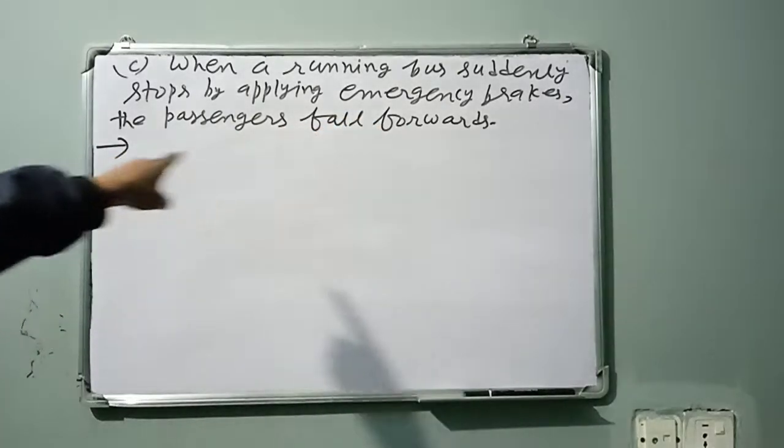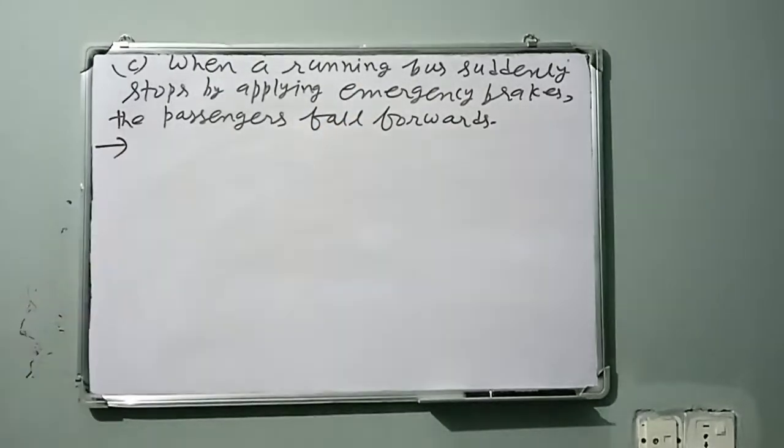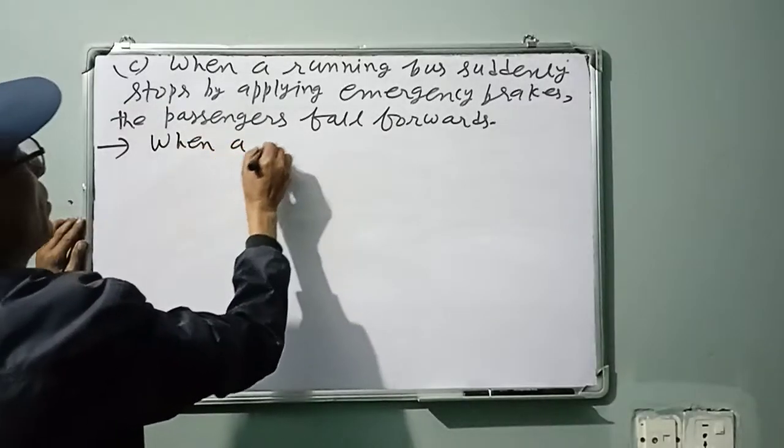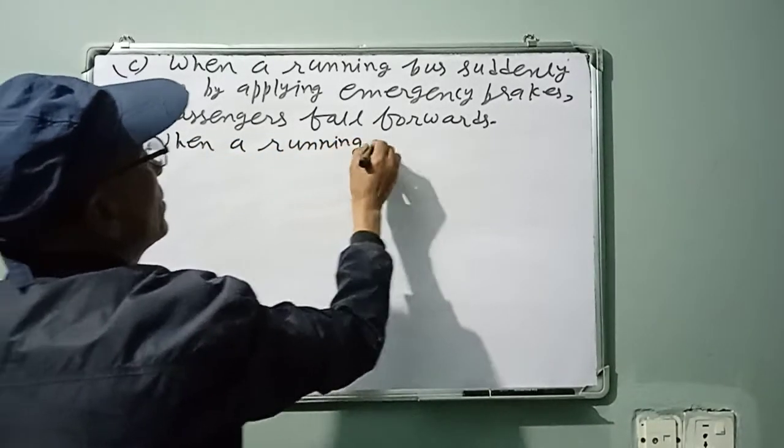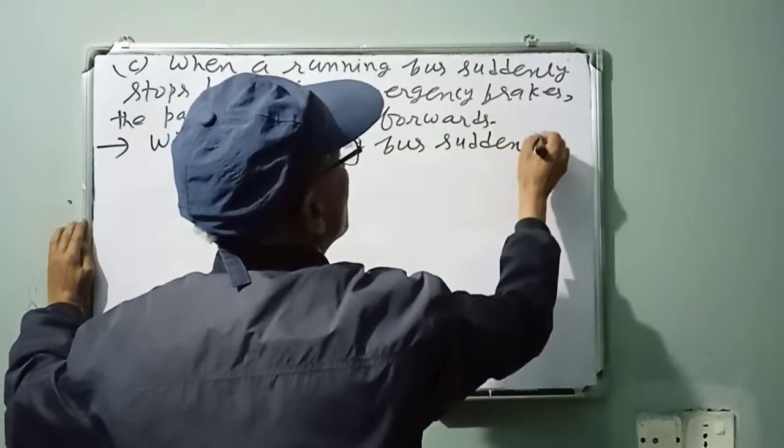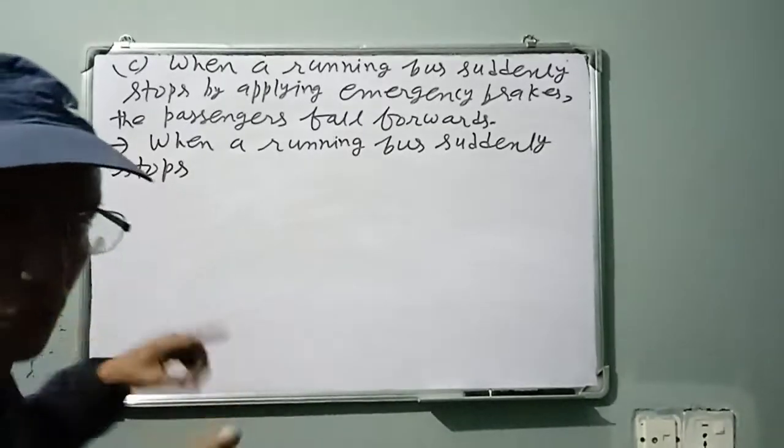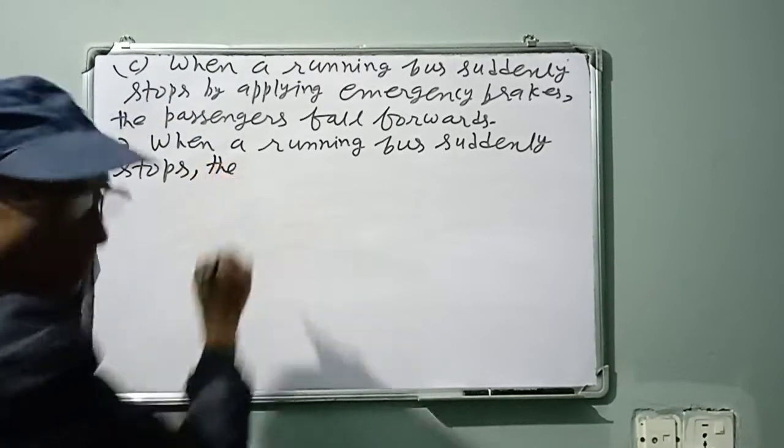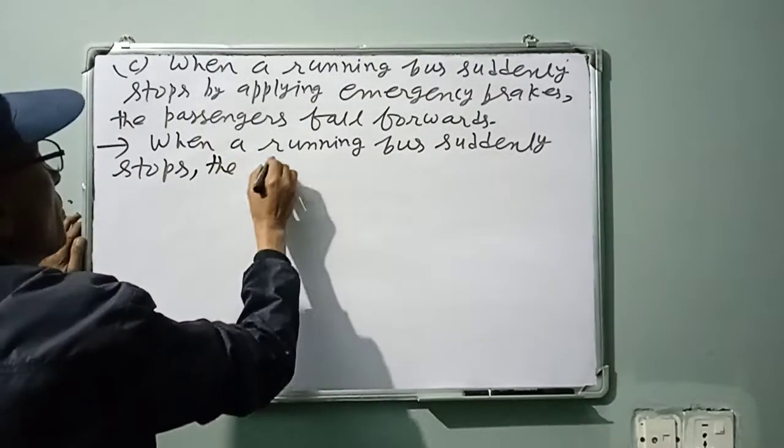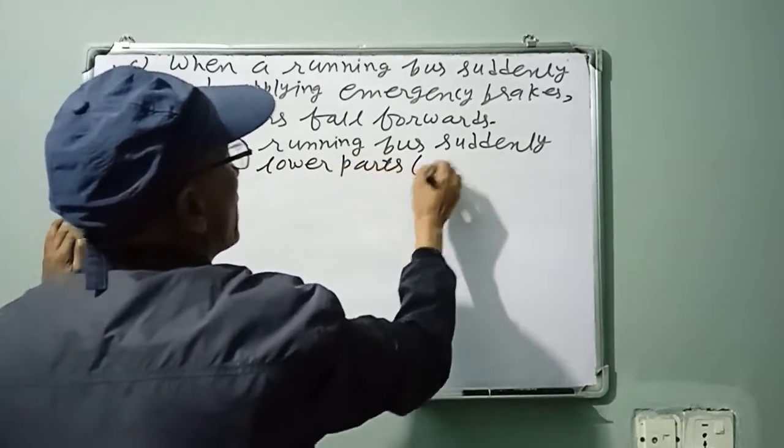When a running bus suddenly stops by applying emergency brakes, the passengers fall forward. Why? When a running bus suddenly stops, what happens to the lower parts?